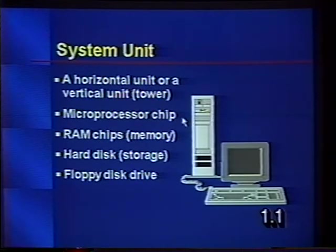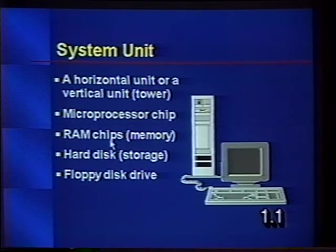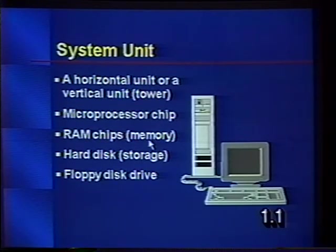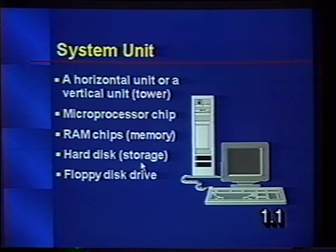Inside the system unit is a microprocessor chip that processes information and runs your computer. Also inside are RAM chips — RAM stands for Random Access Memory, and this is what people mean when they say their computer has a certain amount of memory. Memory is the workspace and has a finite capacity, but you can add more to most systems. The system unit also contains the hard disk, where information is stored or saved — think of it as a filing cabinet. It also contains a floppy disk drive.